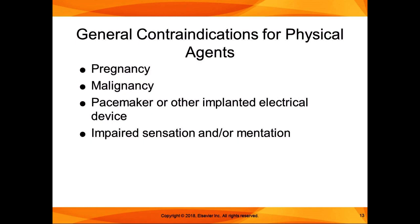Impaired sensation or mentation are contraindications or precautions because the patient has a limited ability to report the effect of the agent. If they can't feel it due to impaired sensation, they can't tell you if it's hurting them. With impaired mentation, the agent's effects may not be within their level of awareness, which is also dangerous. It is definitely a contraindication or precaution — if you do proceed, you must be extremely cautious.